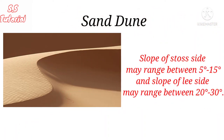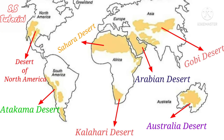The slope of the stoss side ranges between 5 degrees to 15 degrees, but the slope may be 20 degrees to 30 degrees on the leeward side. Sand dunes can be found in almost every arid region, like the Sahara desert, Australian desert, Namibia desert, Kalahari desert, and so on.